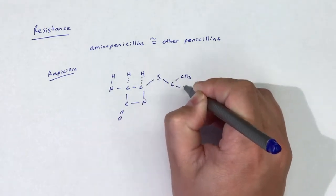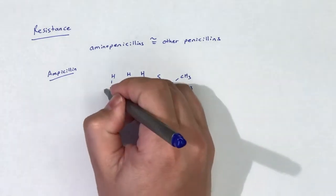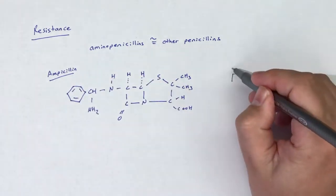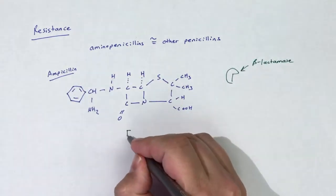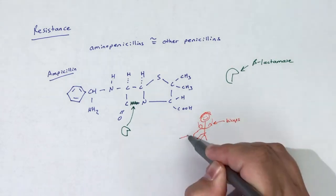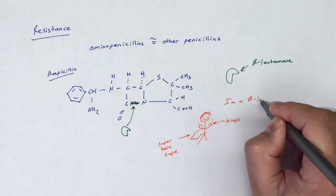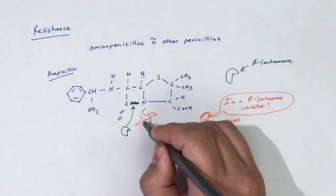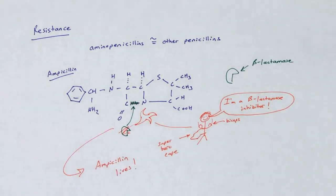To combat beta-lactamase-induced resistance, aminopenicillins are often combined with beta-lactamase inhibitors to extend the spectrum to beta-lactamase-producing bacteria. For a review on these mechanisms of resistance that all penicillins share, please review the video on penicillins.